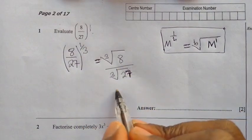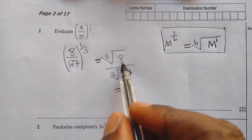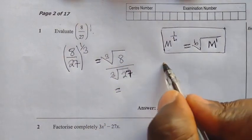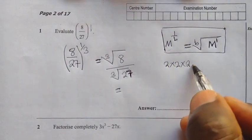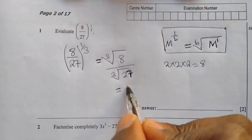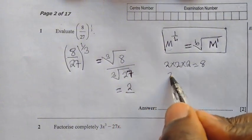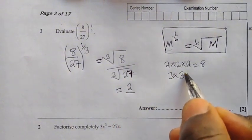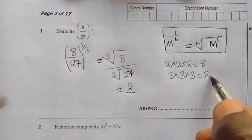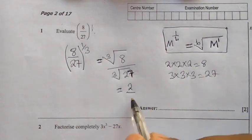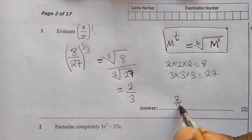The third root of 8 is a number you can multiply by itself 3 times to get 8. We know that 2 times 2 times 2 gives us 8. So the third root of 8 is 2. Over the third root of 27: 3 times 3 times 3 gives us 27, so the third root of 27 is 3. Our answer is 2 over 3.